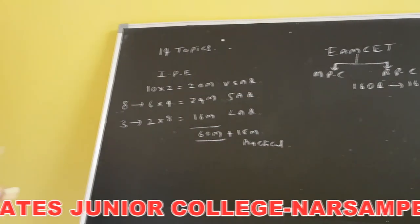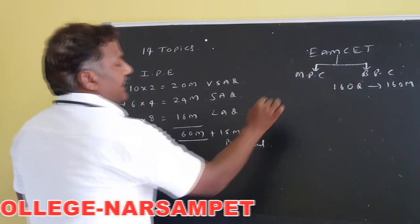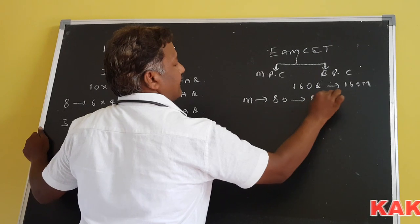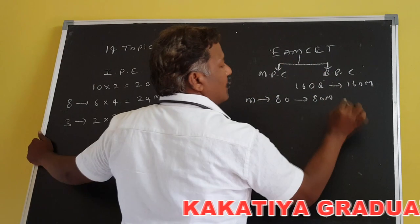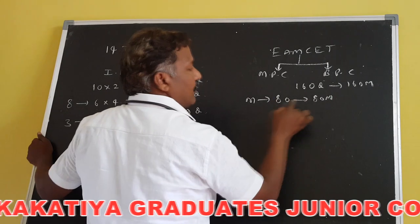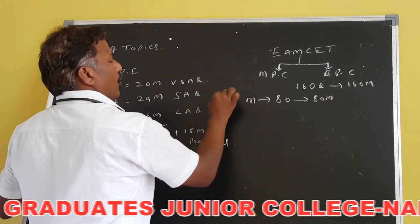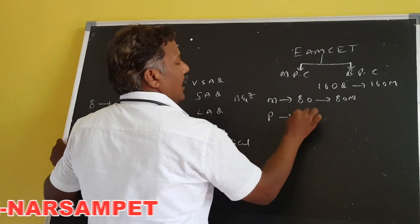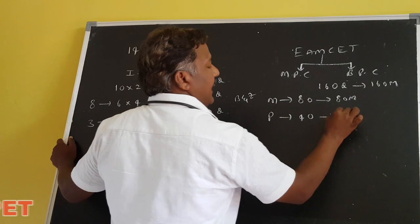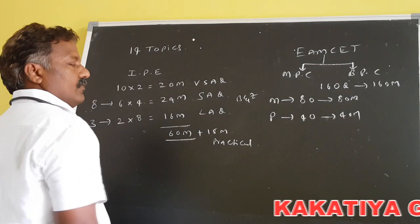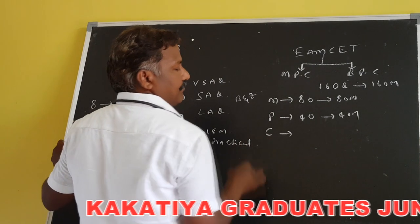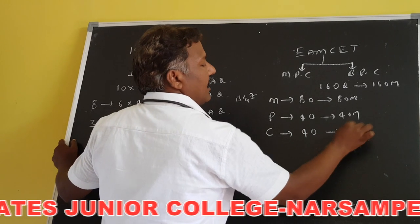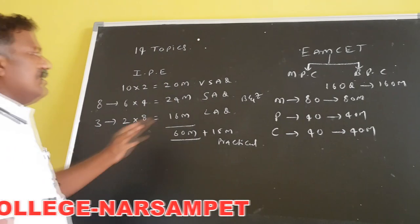Each question carries one mark. For MPC students, mathematics has 80 questions worth 80 marks. For BiPC students, botany and zoology are given instead. Physics has 40 questions carrying one mark each — 40 marks total. Chemistry also has 40 questions carrying one mark each — 40 marks. This is the EAMCET model.